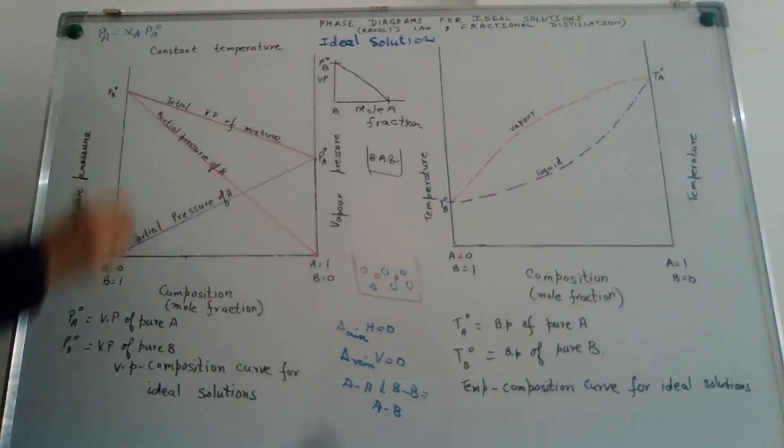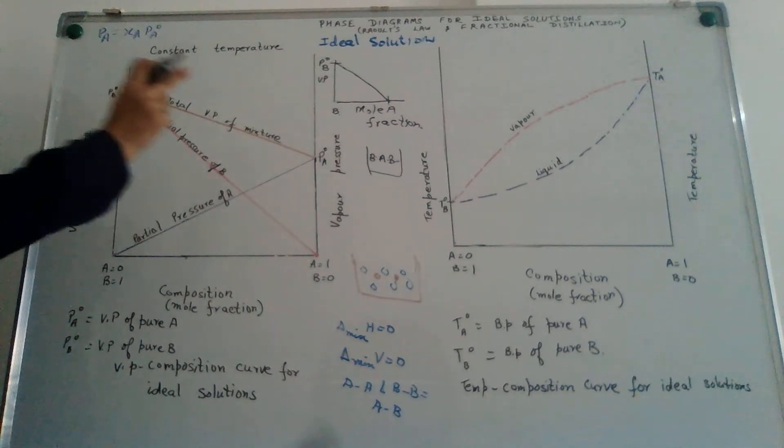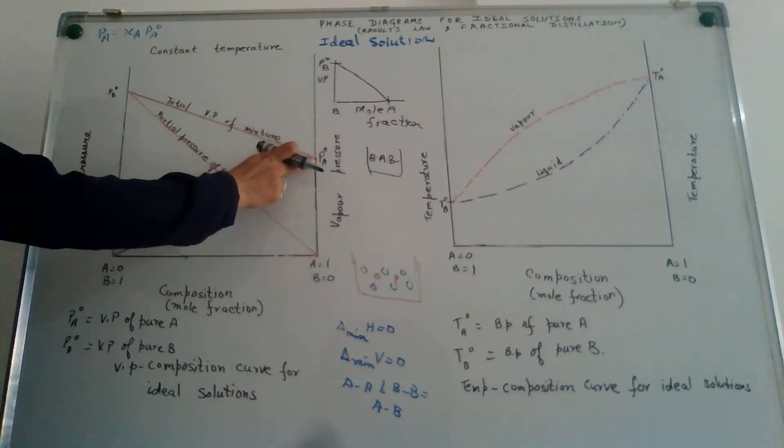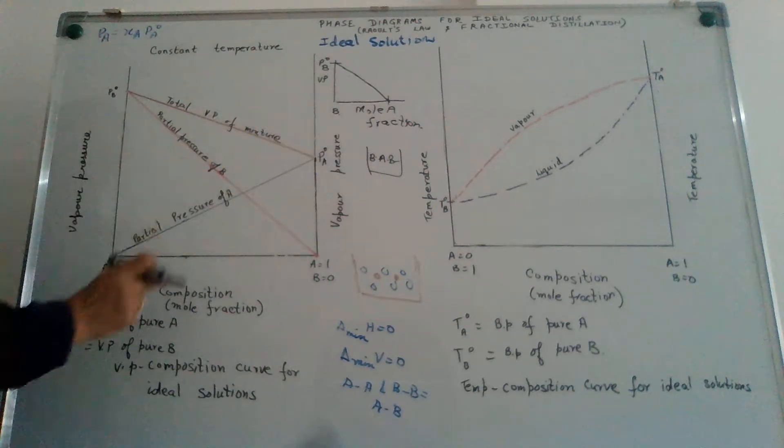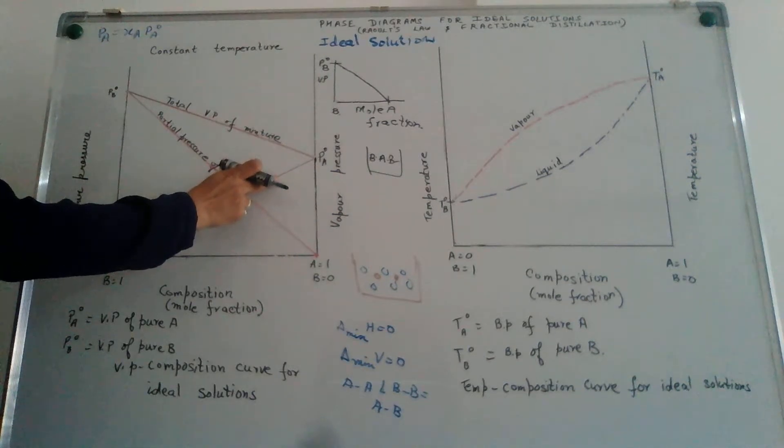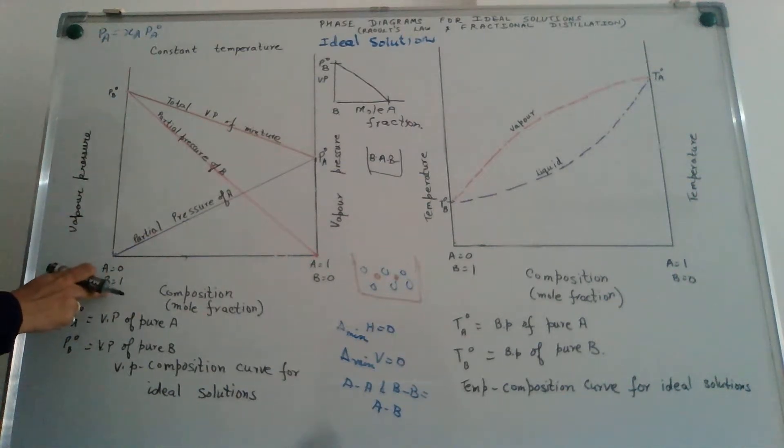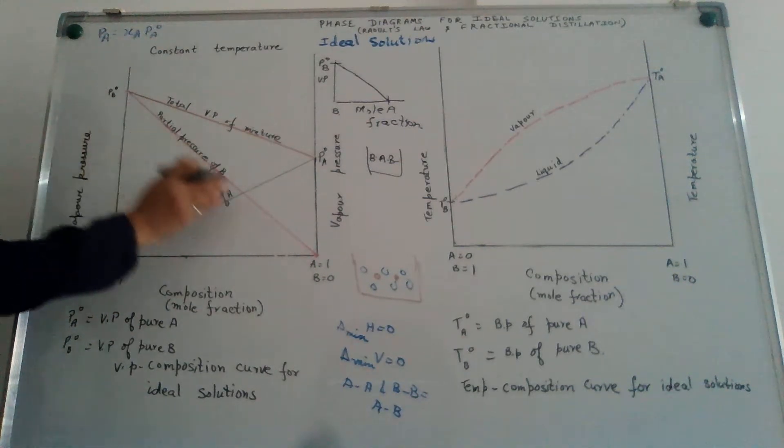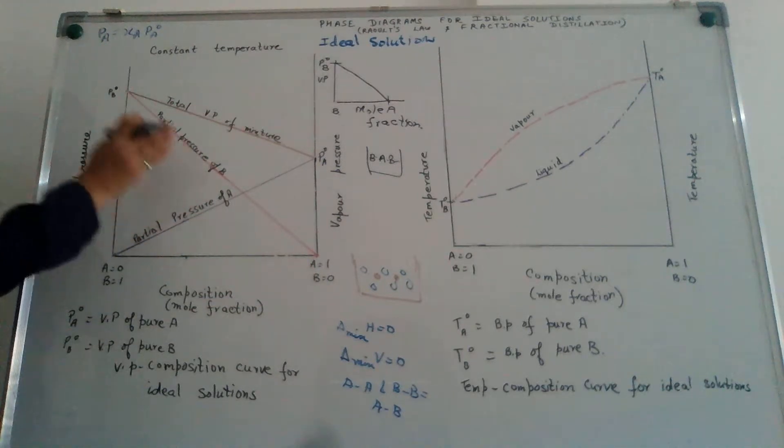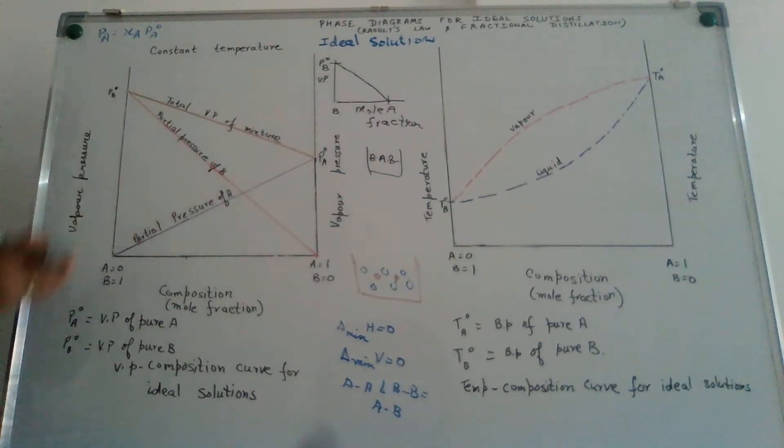Come to a second case where I start with only A in the container. There will be a certain vapor pressure of A denoted by PA0. As we keep adding B to it, the vapor pressure begins to decrease, and we have a case where there is only B. When there is only B, there will be no vapor pressure of A. So we have two graphs - the red line indicating the partial pressure of B, the purple line indicating the partial pressure of A in the mixture.